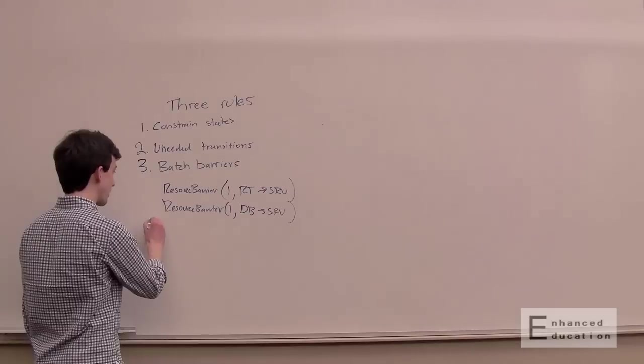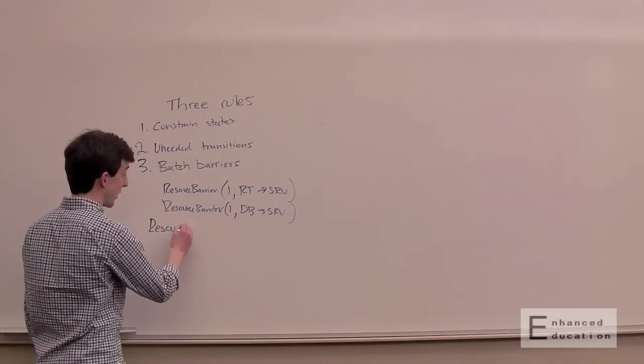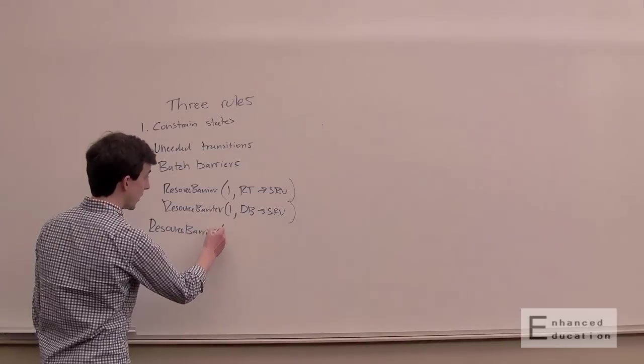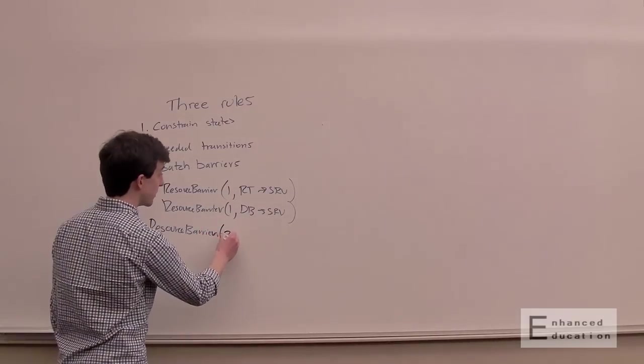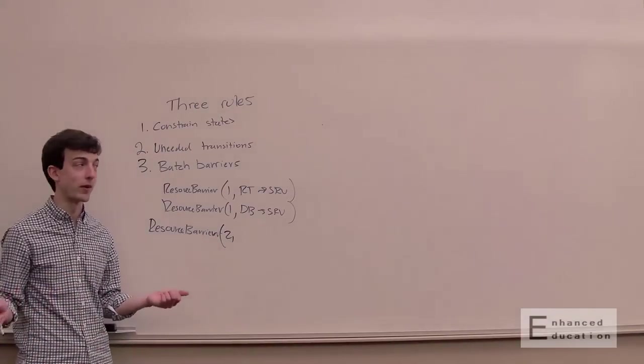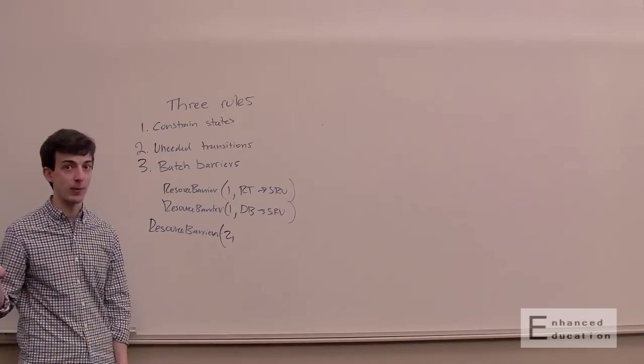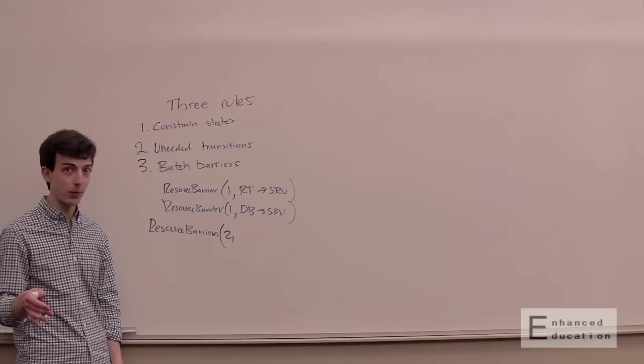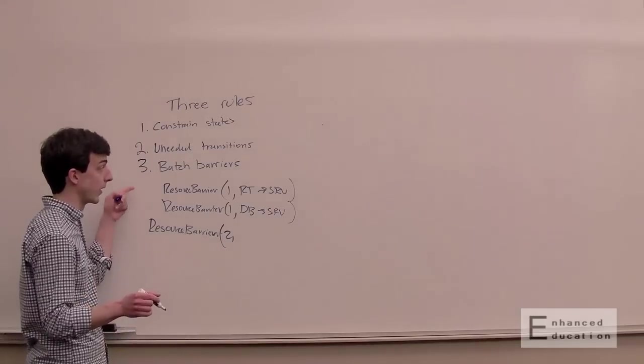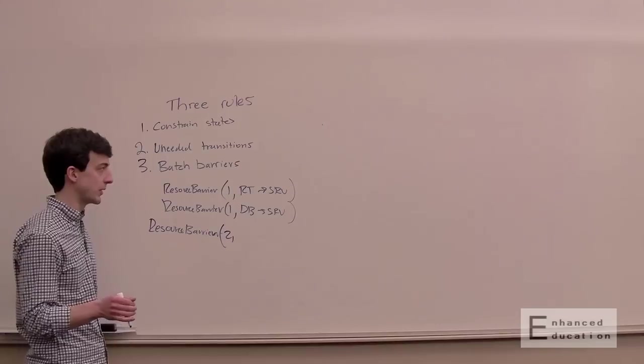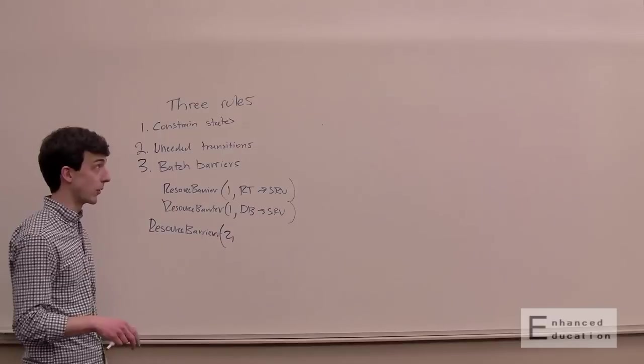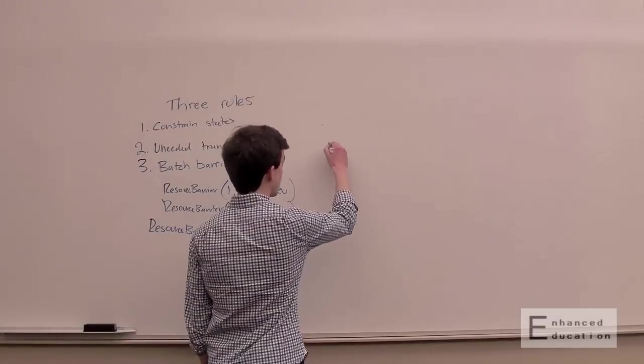So, the resource barrier API actually accepts multiple barriers in the same API call. So, you can actually, the first argument is resource barrier, oops. So, the first argument is the number of barriers you want to do. So, always batch these together. The user mode driver can basically take the intersection of all these, or I guess the union of all these, and avoid doing kind of redundant operations back to back to back. This can really impact performance. So, definitely, like when you're starting to write an engine, or writing an engine, and if you see barriers happening back to back, definitely optimize those out.